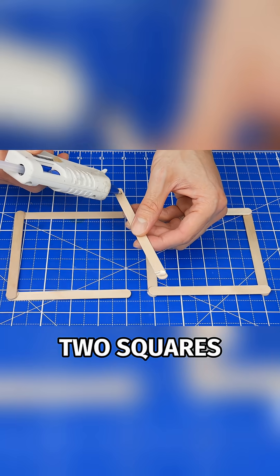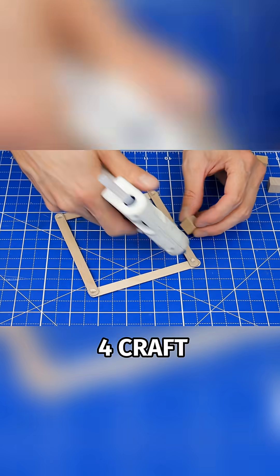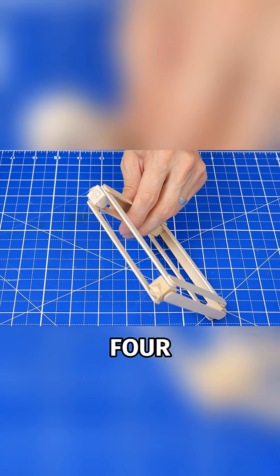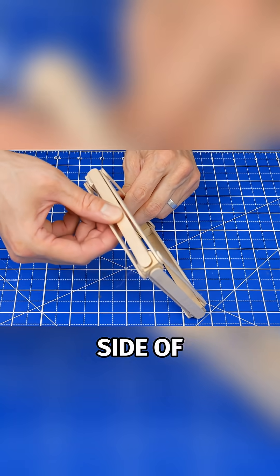The first step is to create two squares like this, then glue four craft sticks and then glue the other square on top. Then glue four more craft sticks onto each side of this piece.